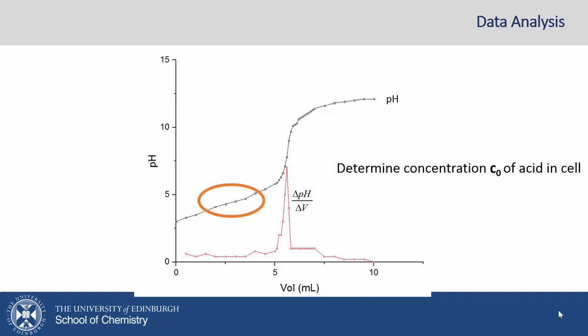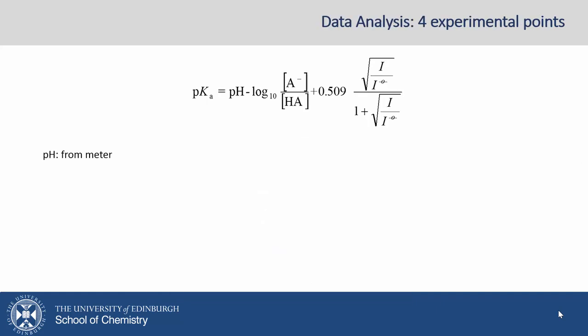We're then asked to pick 4 or 5 points from this region where the solution is acting as a buffer, from before the endpoint value. So take 4 or 5 of these volumes and continue the analysis. We want to calculate the pKa using each of these 4 points. You're going to do this calculation 4 times for your 4 different volumes. pH at these 4 points, you're going to read from the meter.